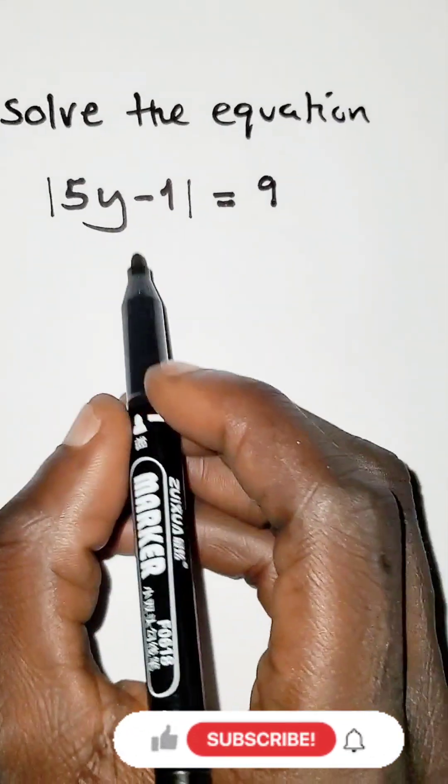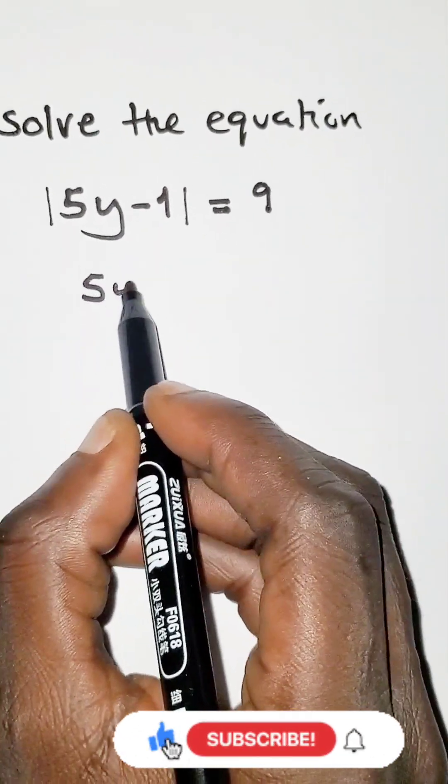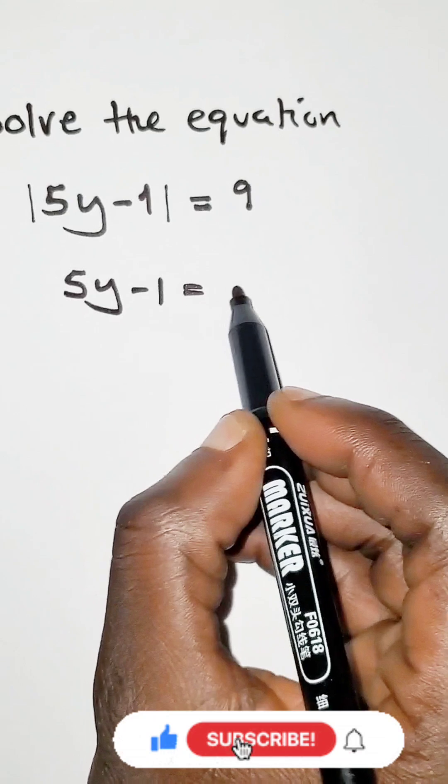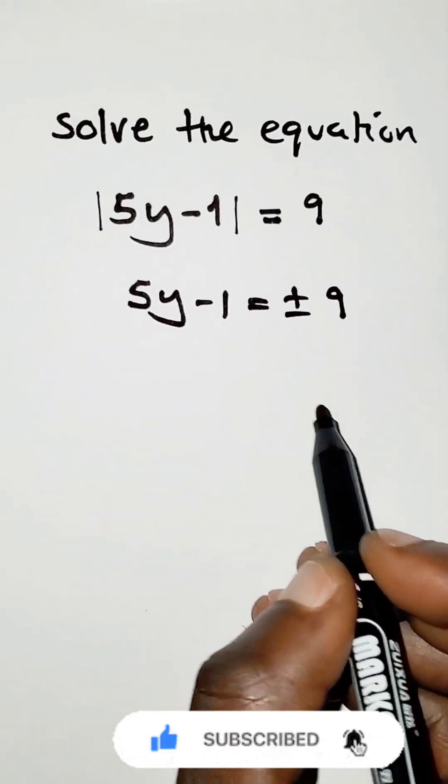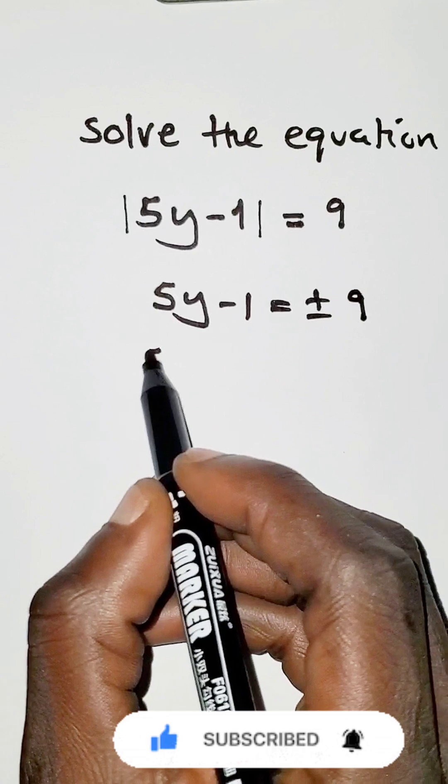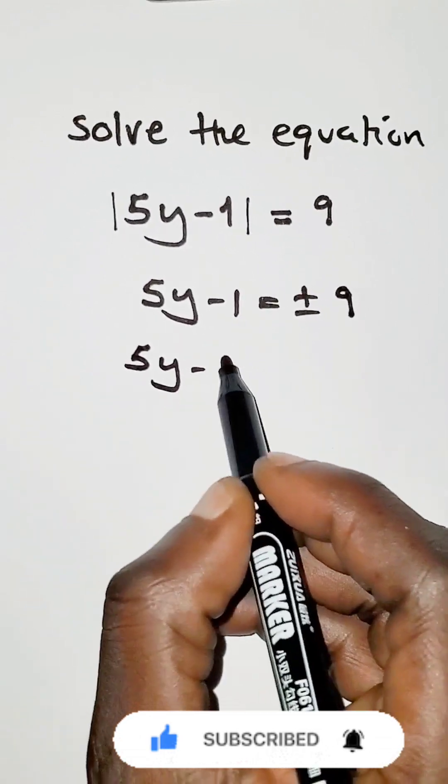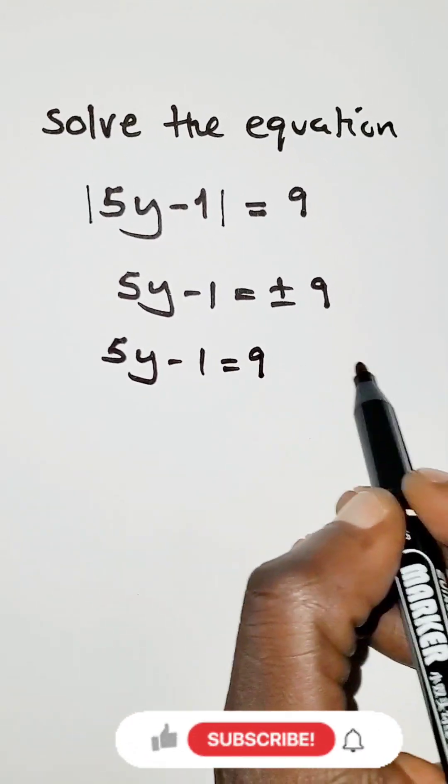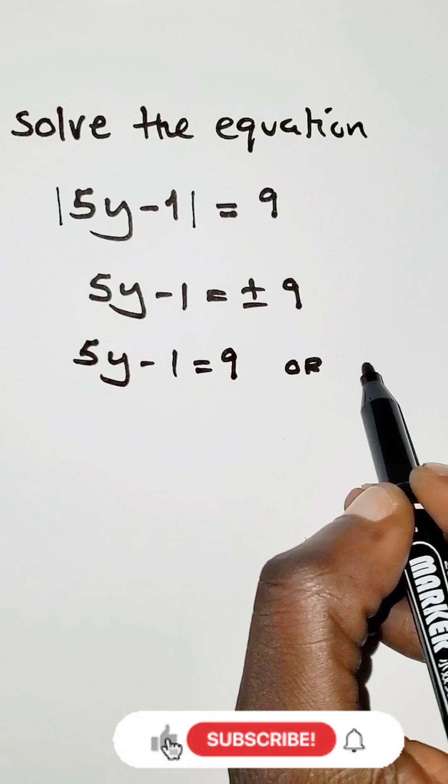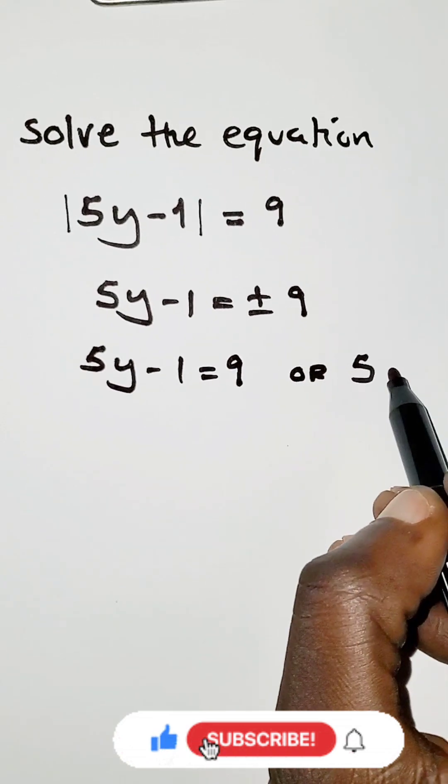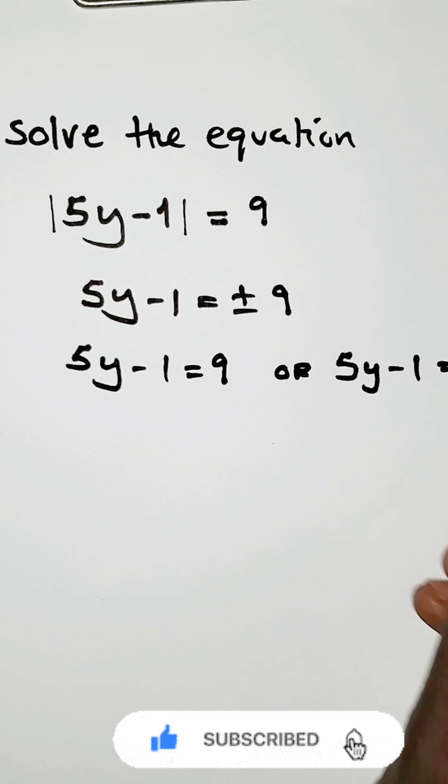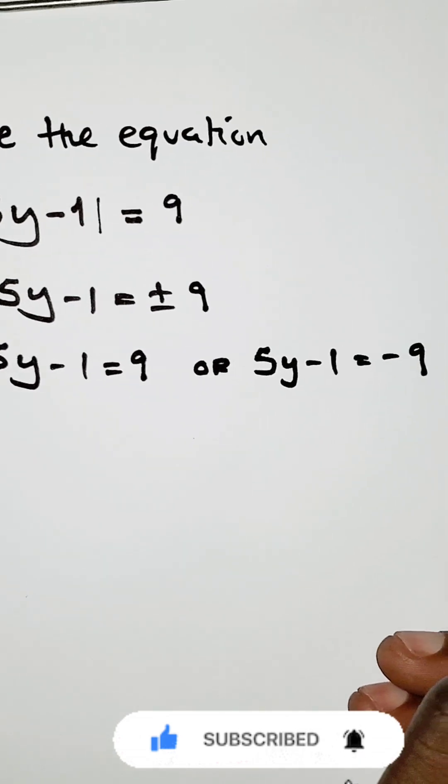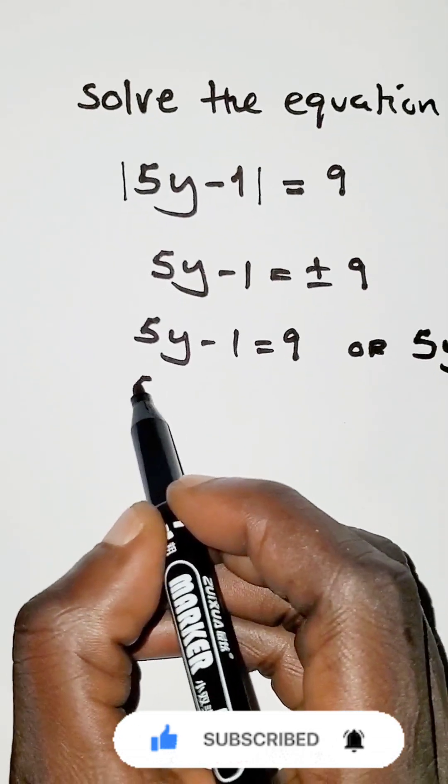To solve this equation, we are going to write 5y minus 1 is equals to positive or minus 9. This is the absolute value, so I want to write 5y minus 1 is equals to positive 9, or the same equation 5y minus 1 is equals to minus 9.